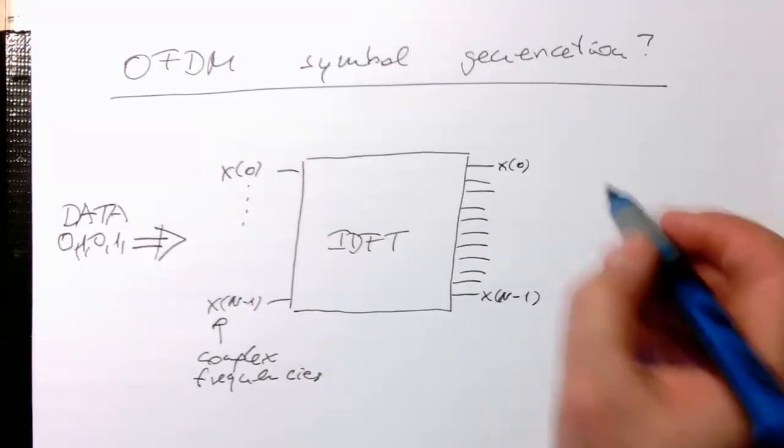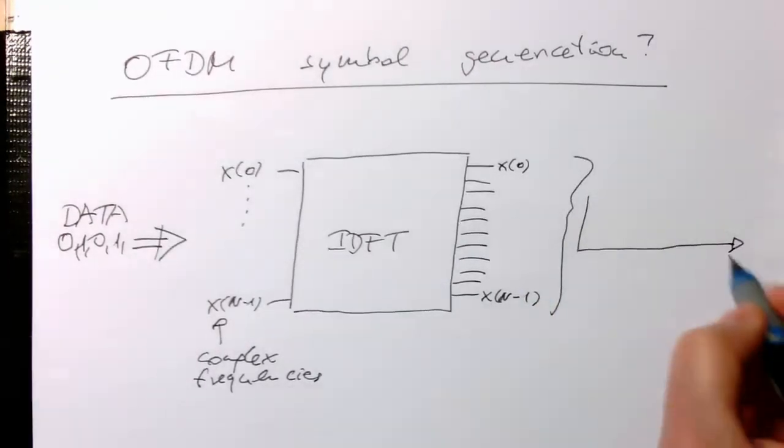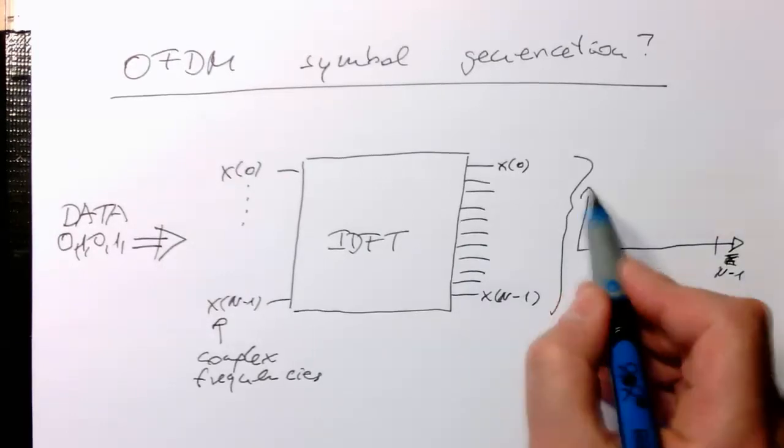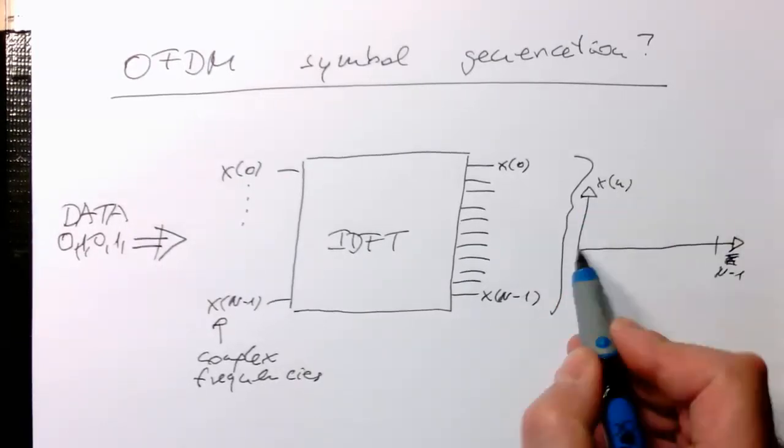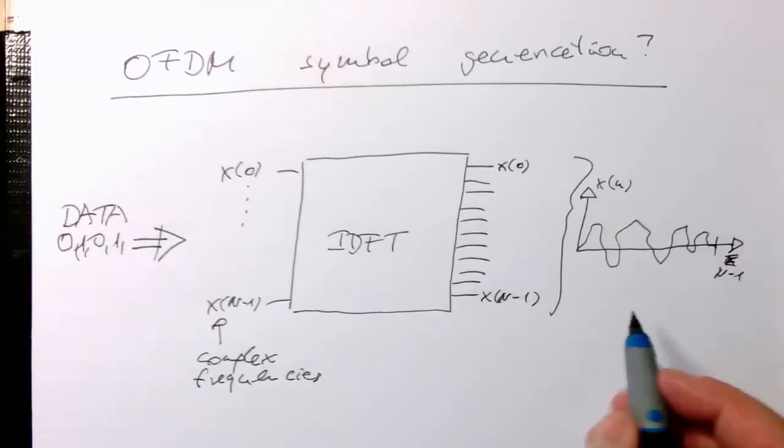But this gives us, if we plot this as a time series, so that's n-1 and that's x(n), we're getting some strangely shaped symbol here.